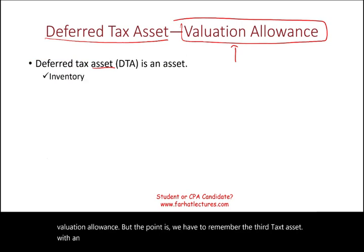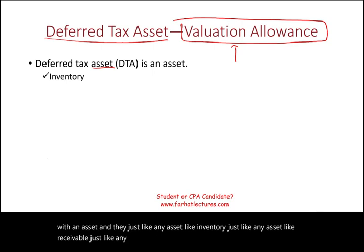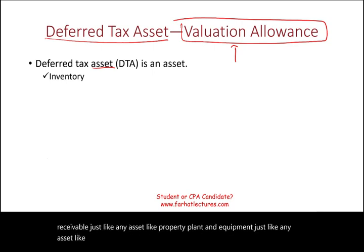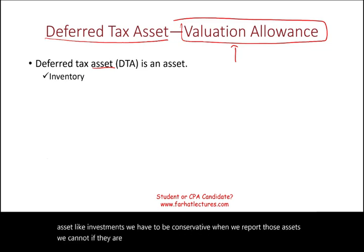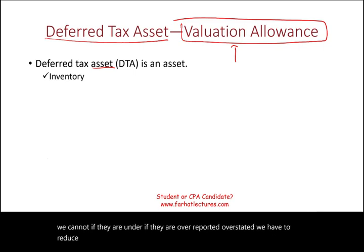Just like any asset — like inventory, receivable, property plant and equipment, or investments — we have to be conservative when we report those assets. If they are overstated, we have to reduce them to their true value.